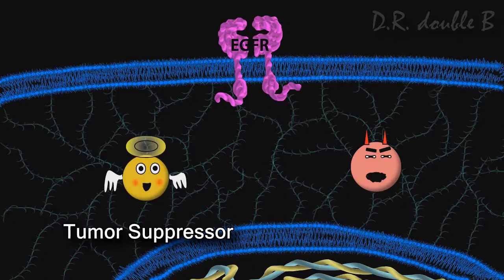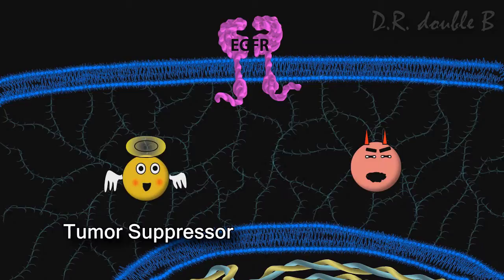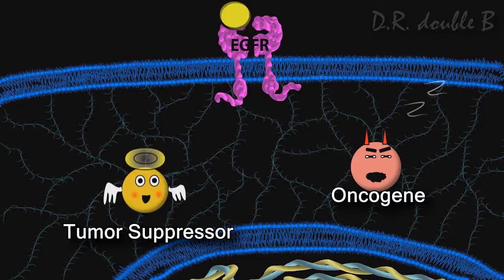Inside the cell, these proteins include tumor suppressors that tell the cell to calm down, and oncogenes that tell it to multiply. Oncogenes are normally turned off, but can be activated by growth hormones binding to receptors.